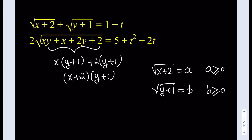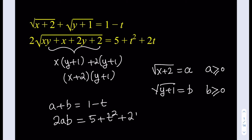After doing these substitutions, we get a really nice, simpler system. We get a plus b equal to 1 minus t. And from the second expression, since this is the product of a and b, we get 2ab equal to 5 plus t squared plus 2t.